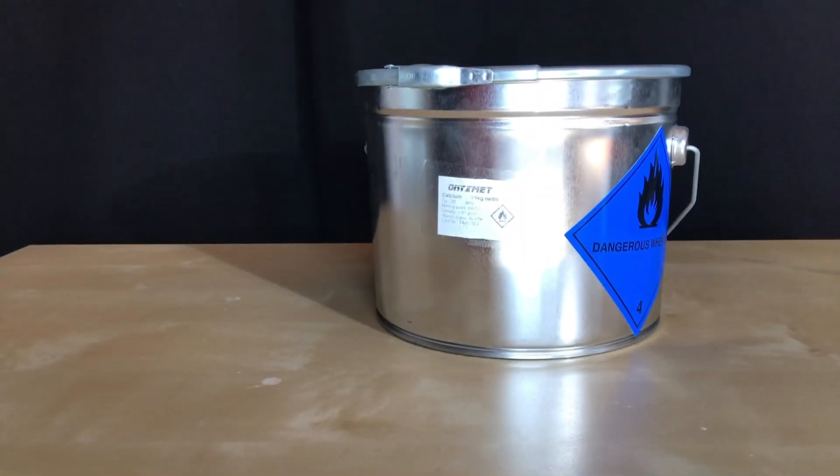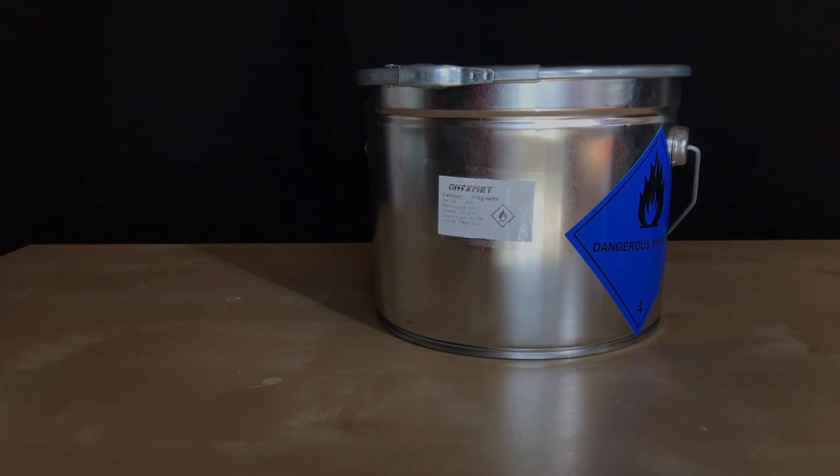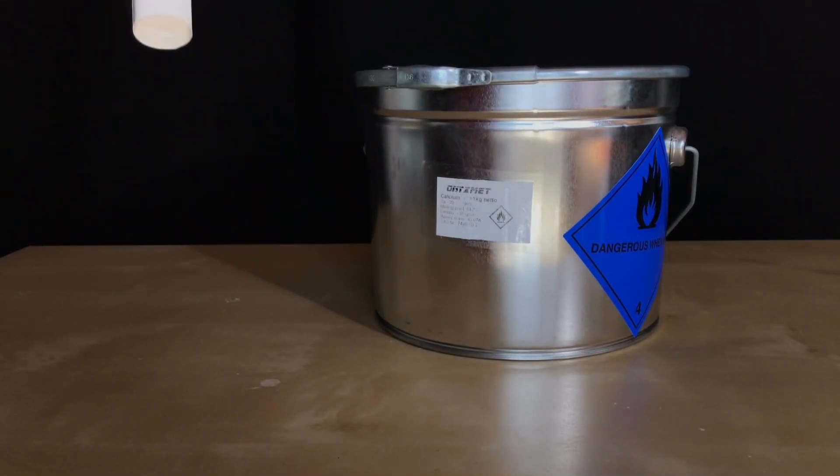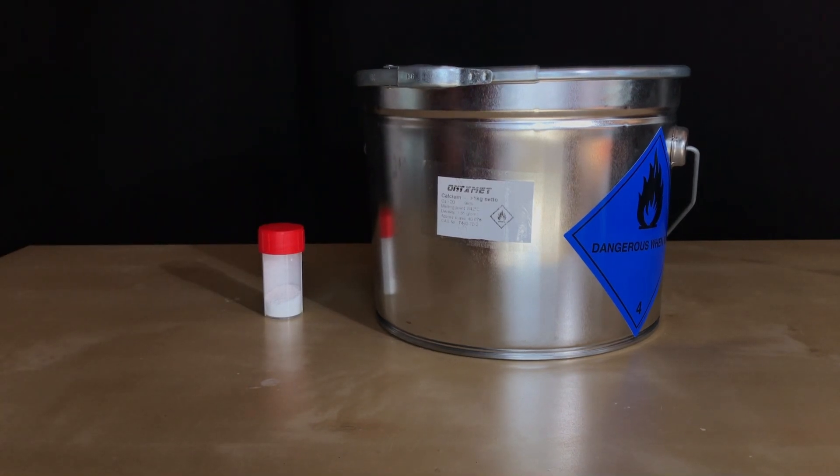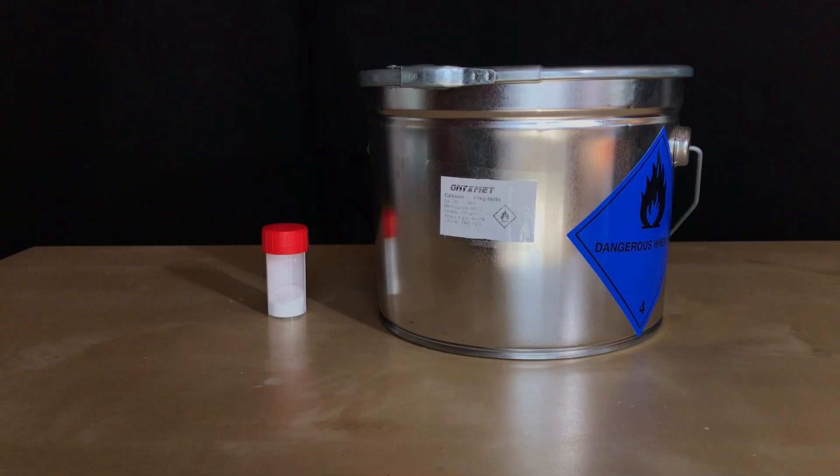Welcome back everyone. Today we are going to recover a metal from its corresponding and highly interesting oxide using a reducing agent. For this you are going to need a metal oxide and a reducing agent which is less noble than the metal in the metal oxide.